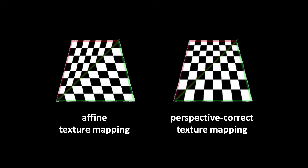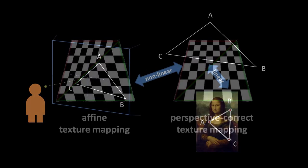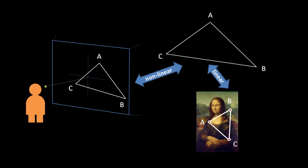The issue is that affine mapping doesn't correctly account for 3D projection. If the relationship between the three triangles were linear, we could use a linear mapping from the view plane to the texture to get correct results. However, the relationship between coordinates of the view plane triangle and coordinates of the 3D triangle is not linear, thanks to the effect of 3D projection.